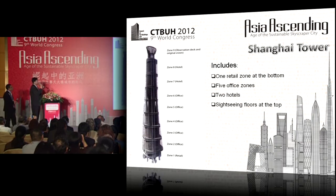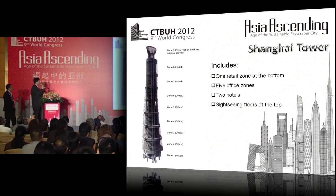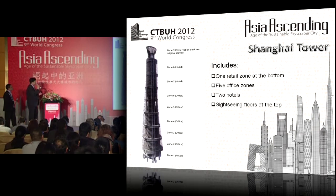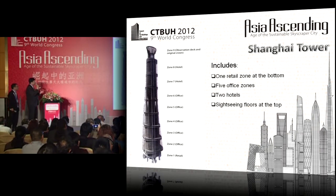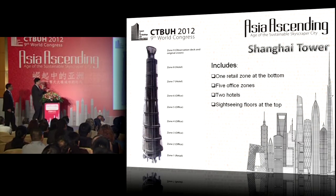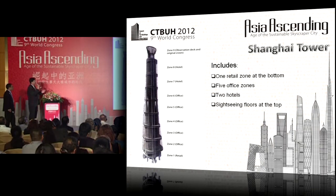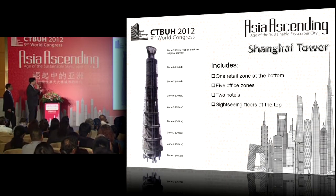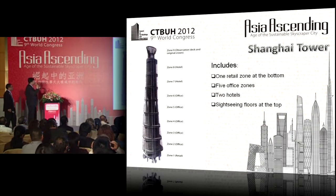Looking at the entire Shanghai Tower based on functionality, we divide it into nine zones in total, along with mechanical equipment floors and evacuation zones. The standard stories are circular in shape. The exterior curtain wall has a double-skin structure, and as it rises from bottom to top, it is rotating and shrinking as the height increases.